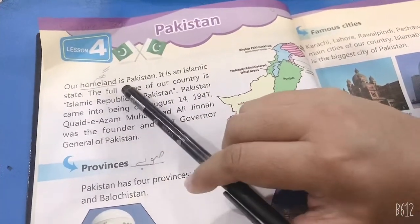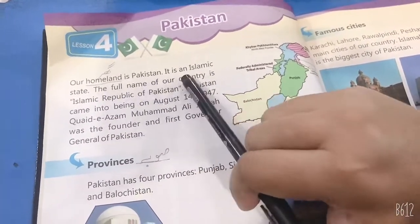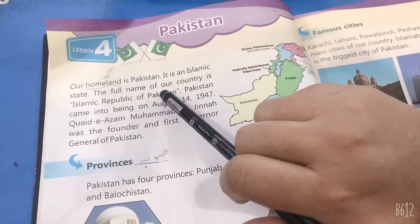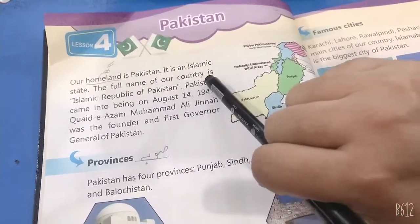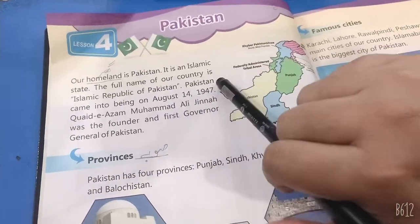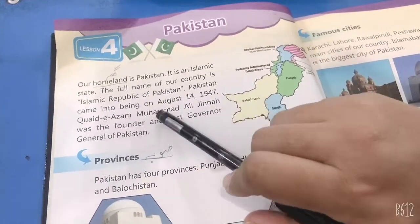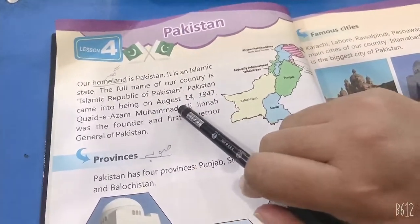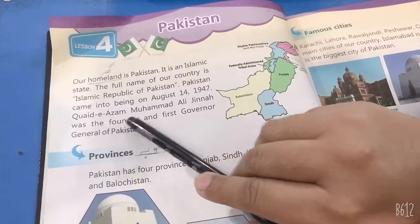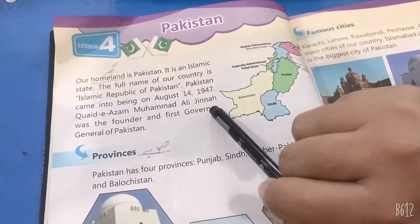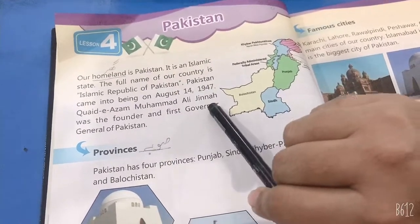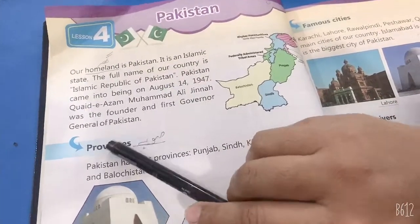Our homeland is Pakistan. It is an Islamic state. The full name of our country is Islamic Republic of Pakistan. Pakistan came into being on August 14, 1947. Quaid-e-Azam Muhammad Ali Jinnah was the founder and first Governor General of Pakistan.